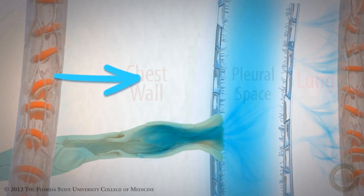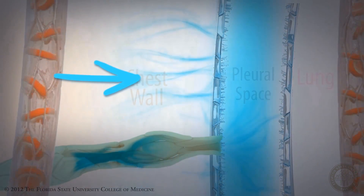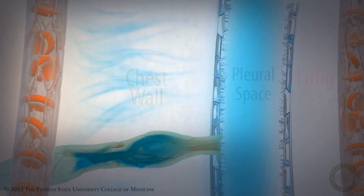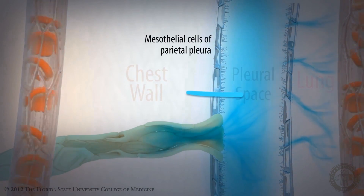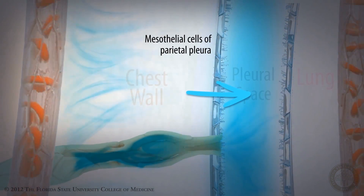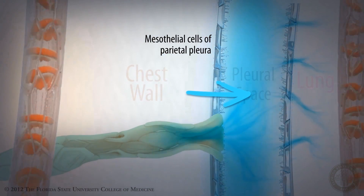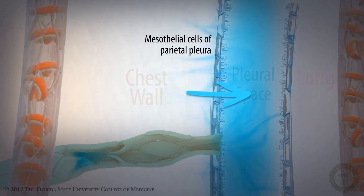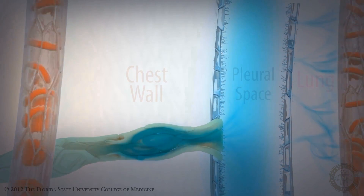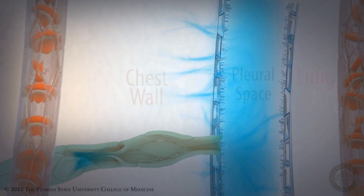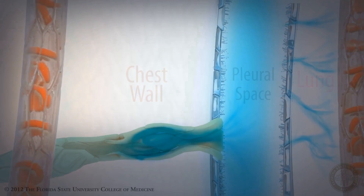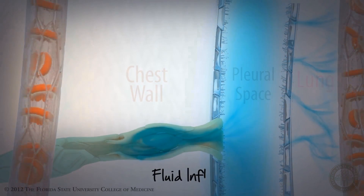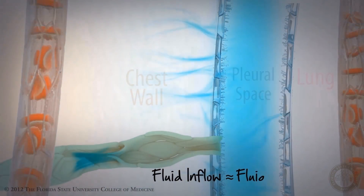Plasma filtrate is drawn by a pressure gradient from the subpleural capillaries in the chest wall, and this fluid passes through the mesothelial cells of the parietal pleura into the pleural space by what are called Starling, or pressure-related, forces. The volume of fluid in the pleural space is maintained in equilibrium under normal circumstances, such that fluid inflow is approximate to fluid absorption from the pleural space.